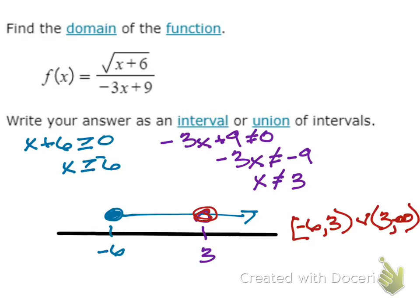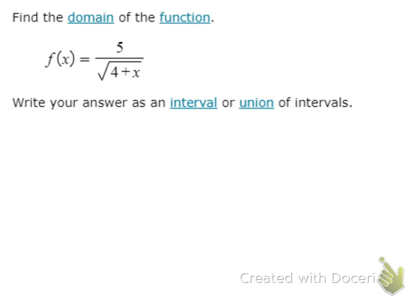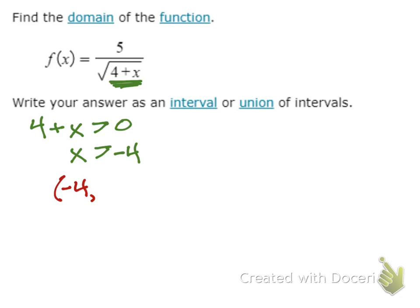Let's look at a different situation. Here, we have a radical and a denominator all at the same time, so we need to think about this a little differently. Not only do we need the argument to be greater than or equal to 0, it actually can't be equal to 0 because that would give us a 0 in the denominator. So we need 4 plus x to be greater than 0, which means x has to be greater than negative 4. My interval would be negative 4 to infinity.